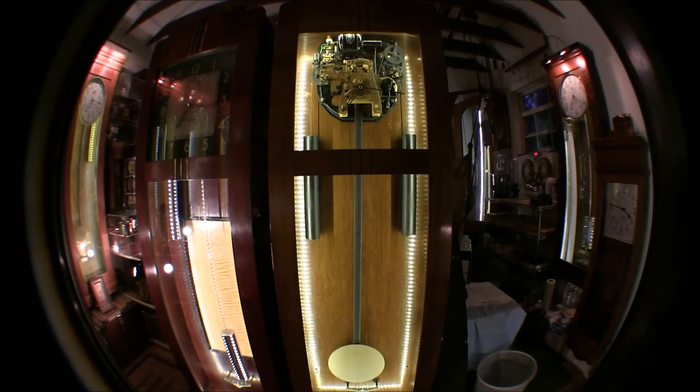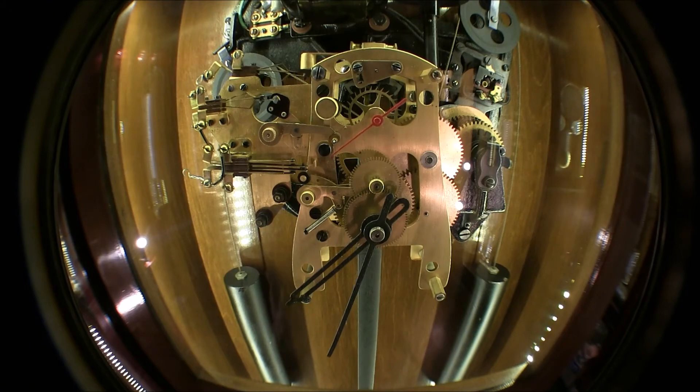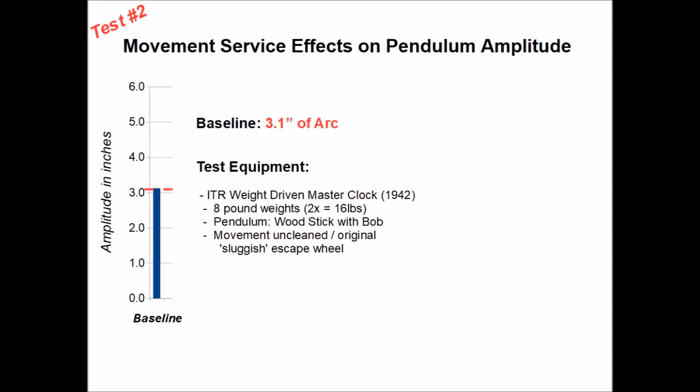For test number two, I'll use this International weight driven master clock made in 1942 with all original equipment and will focus on the movement. At the start of the test, this clock also had a 3.1 inch arc of the pendulum and the movement was sluggish.